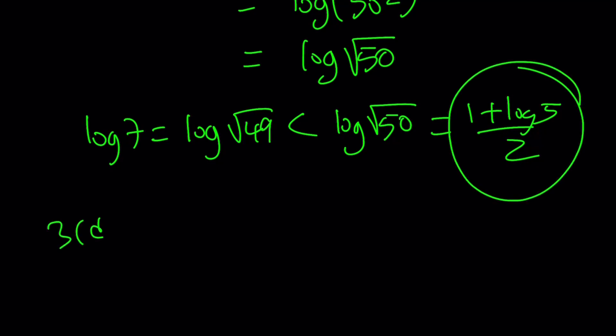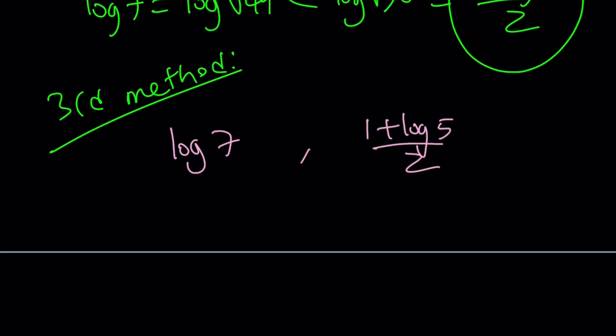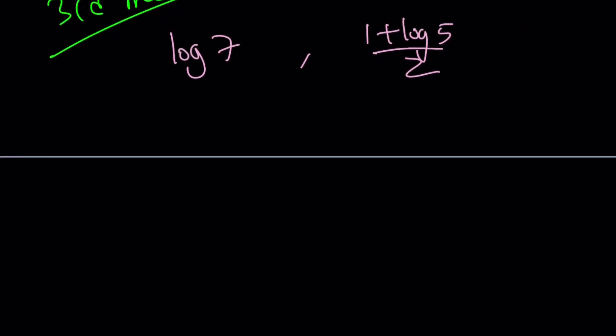Let's go ahead and talk about the third method real quick. And then we'll finish up with that. The third method used this idea. So again, we're trying to compare log 7 and 1 plus log 5 divided by 2. So I'm going to start off with something like this. And again, this is not random. If you assume one of these numbers is larger than the other and work backwards, you're going to get the same idea.